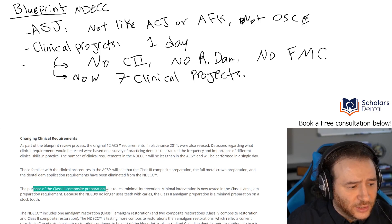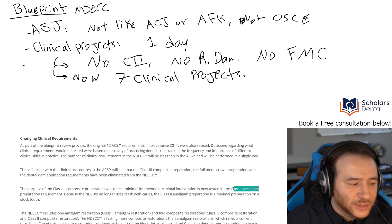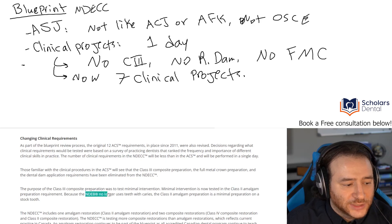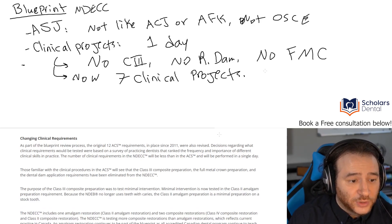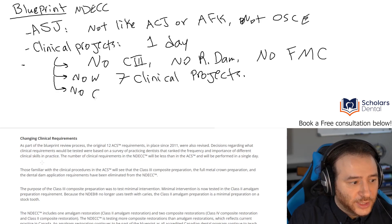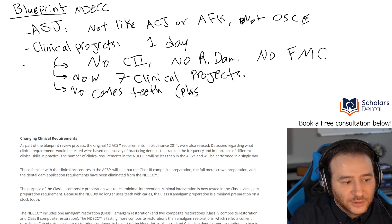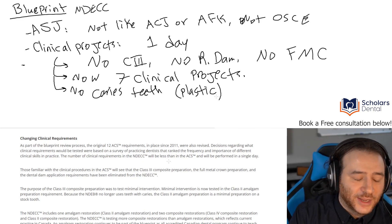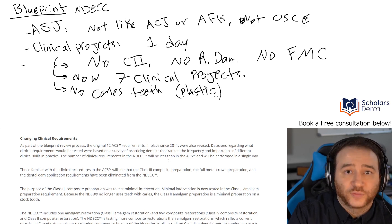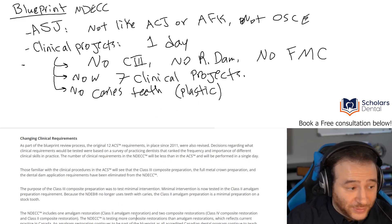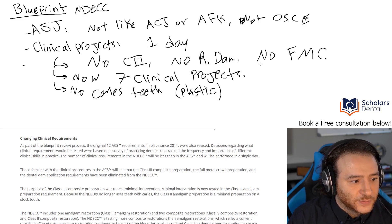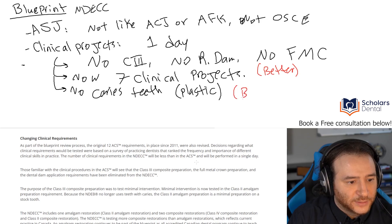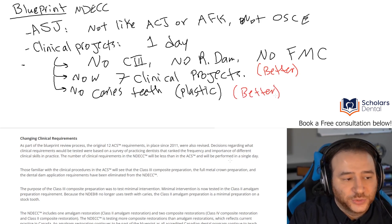The purpose of the class three composite was to test minimal intervention. Now the class two amalgam preparation serves that role, since the NDEB no longer uses teeth with caries. The class two amalgam preparation is a minimal preparation on the stock tooth. This also means no special Kilgore teeth — it's going to be mainly plastic teeth, which is a lot better in terms of practicing and financially. When you're practicing, you don't have to buy those expensive Kilgore teeth.